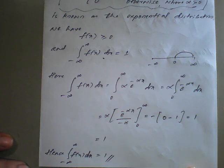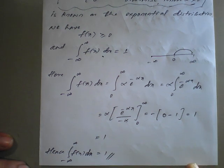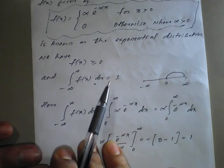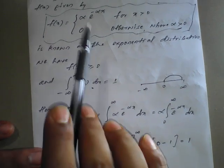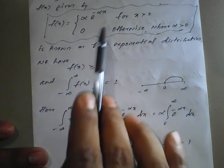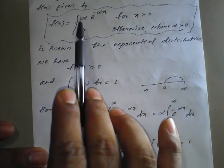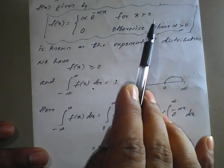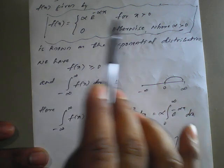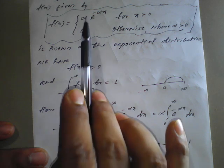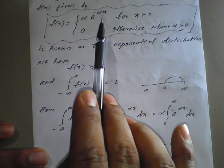So the second condition holds for the exponential distribution. The key expression to remember is: f(x) equals alpha times e raised to minus alpha x, for x positive. This is the expression for exponential distribution.